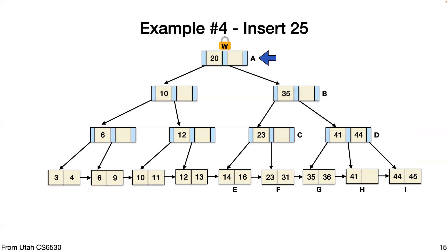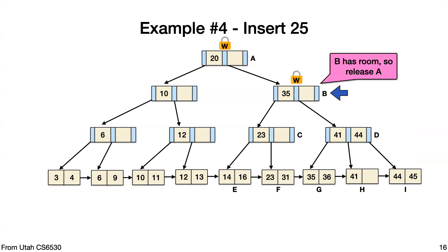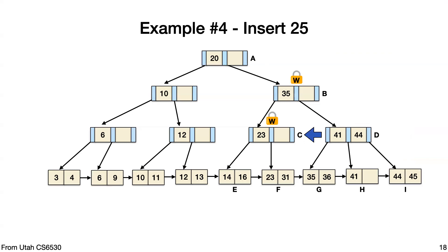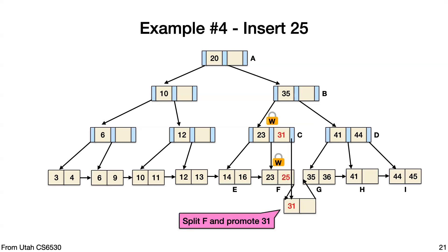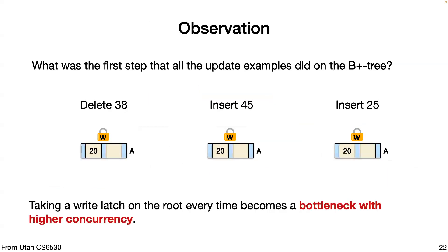Now inserting 25: there's still room in B so we release A again. We traverse a different part of the tree. C also has room so we release B. Now we have to split F because 25 is going in but there's no space. We keep C and F because we're going to promote something into C. We split the node — 31 becomes the new front and gets promoted into C. That's reader/writer locks on B trees.